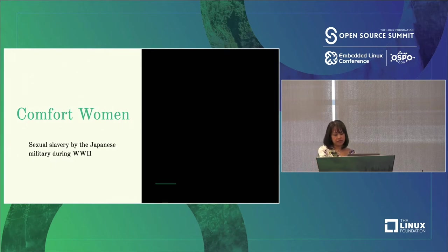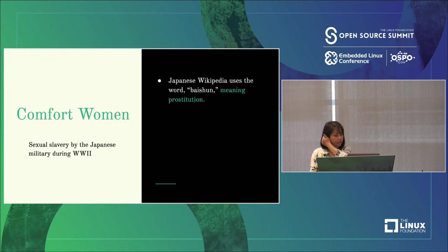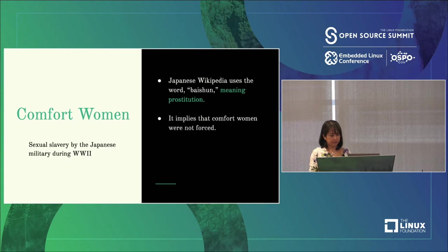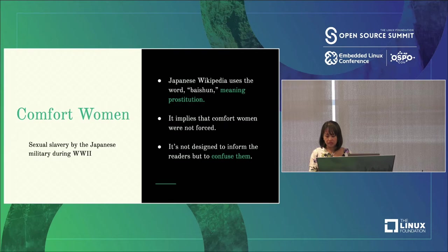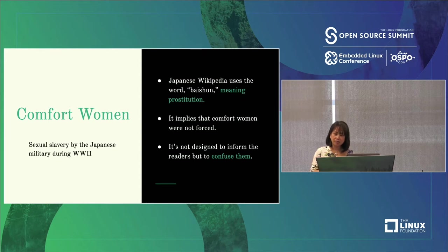Another example is the page about comfort women — mostly Korean women who were forced into sexual slavery by the Japanese military. The page uses the word 'Baishun,' meaning prostitution, to describe them, implying they were not forced. In one passage it says there were three types of 'battlefield sex policies' during World War II: 'Free Love' for British and US forces, 'Comfort Station' for Japan, Germany, and France, and 'Rape' for the Soviet Union and Korea. This is not only false but also incomprehensible, and that seems to be the point. The article is not designed to inform readers but to confuse them and cast a seed of doubt — this is how propaganda tends to work.